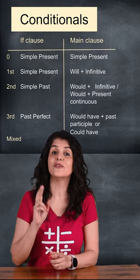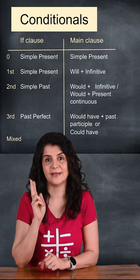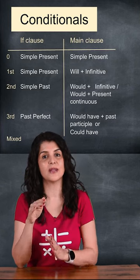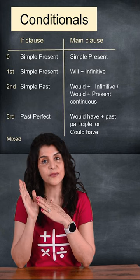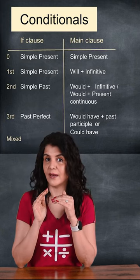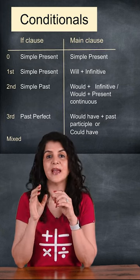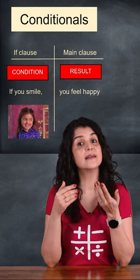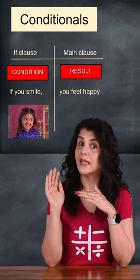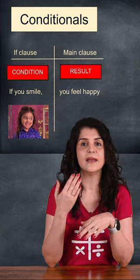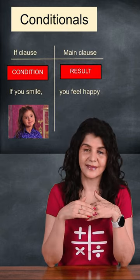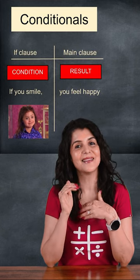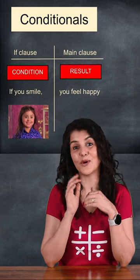Conditional sentences have two clauses — very simply, we can call them the if clause and the main clause. The if clause is the condition and the main clause is the result. For example: if you smile, you feel happy.